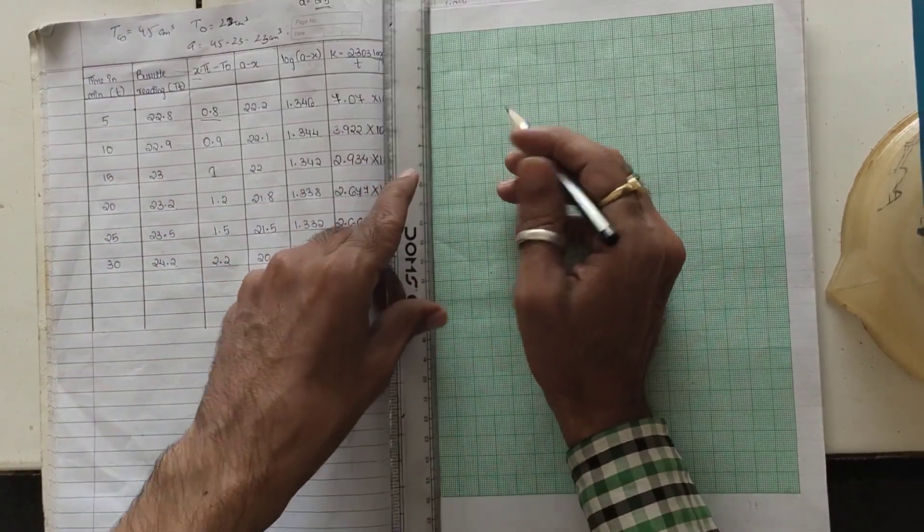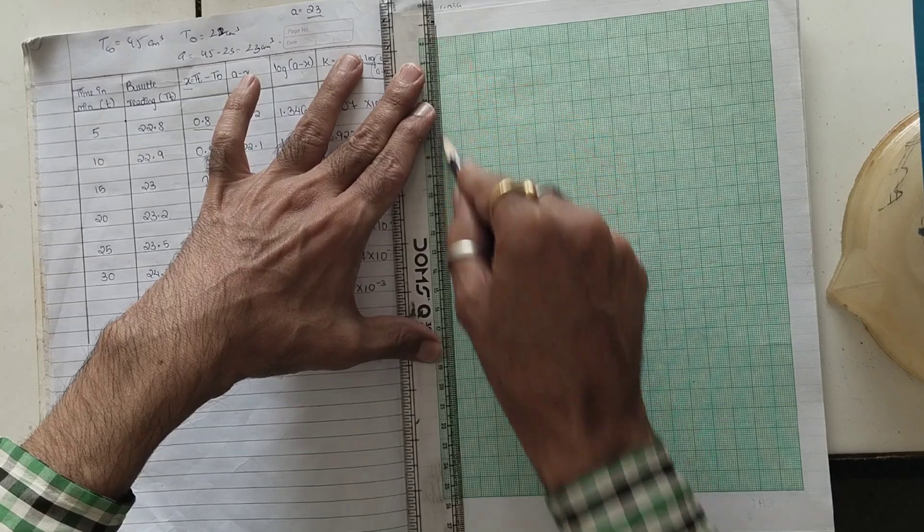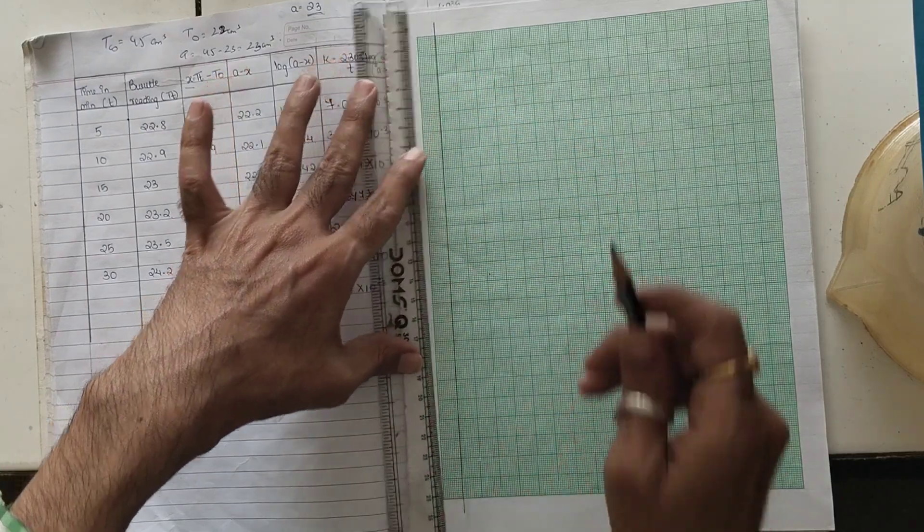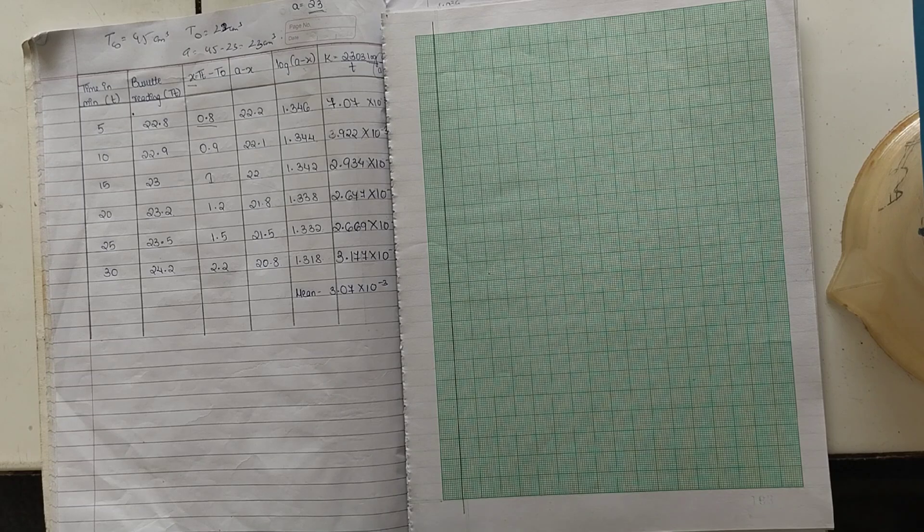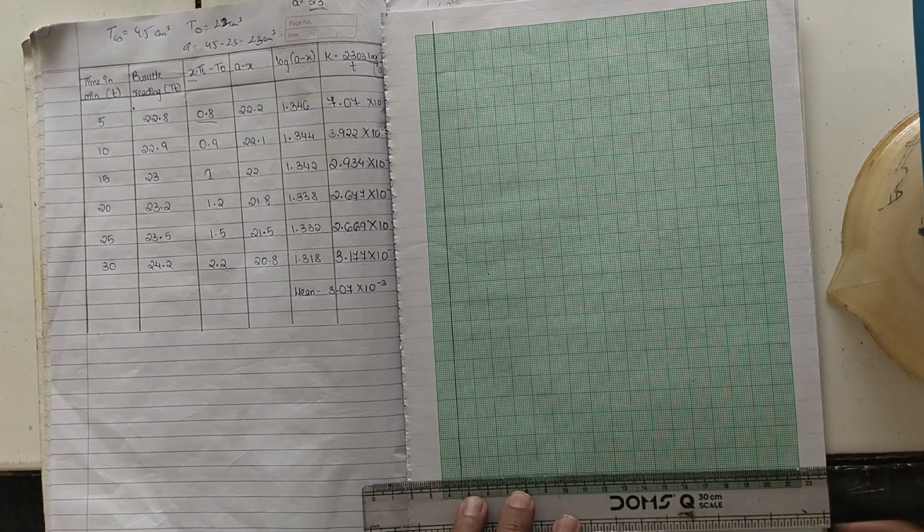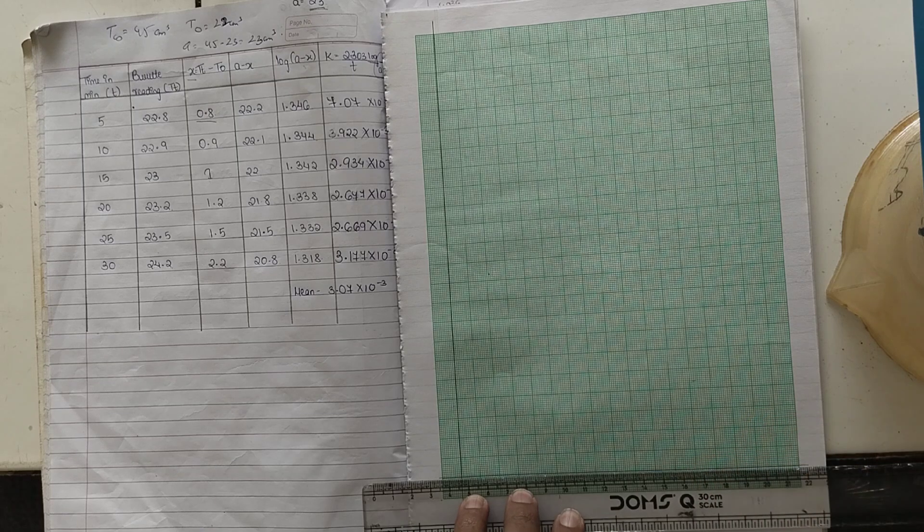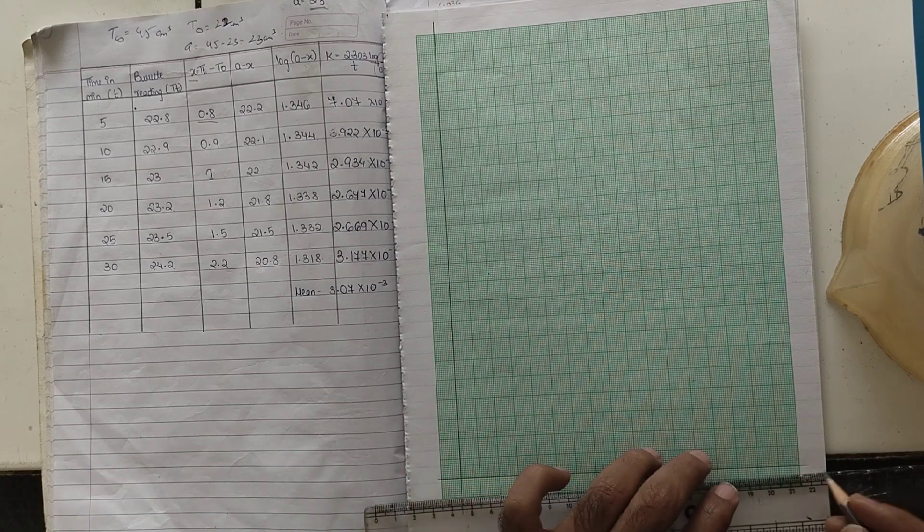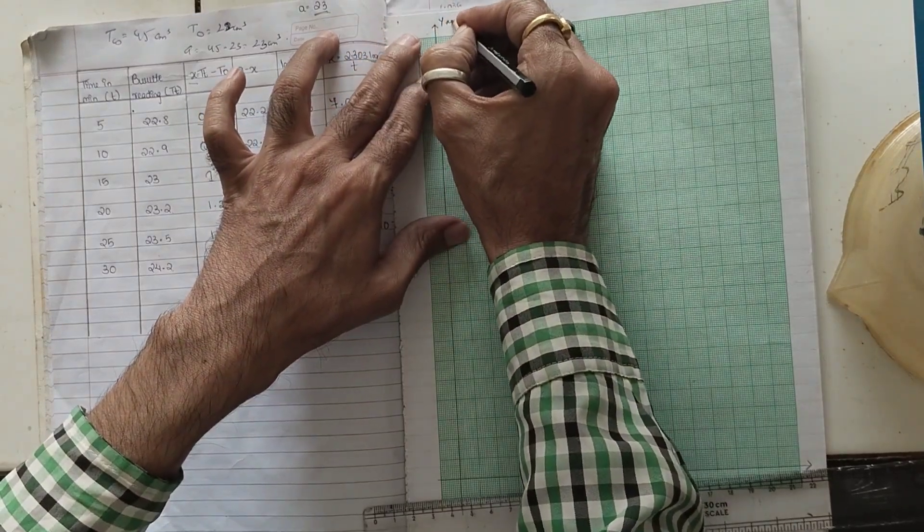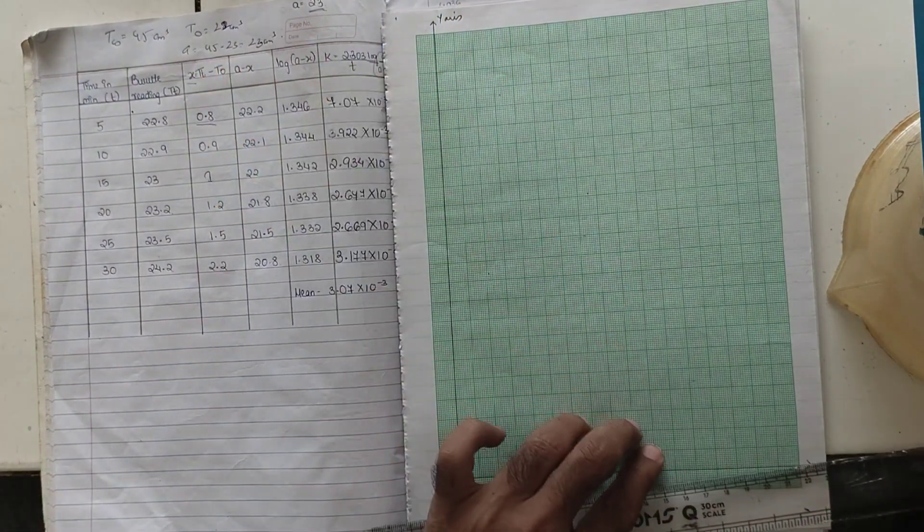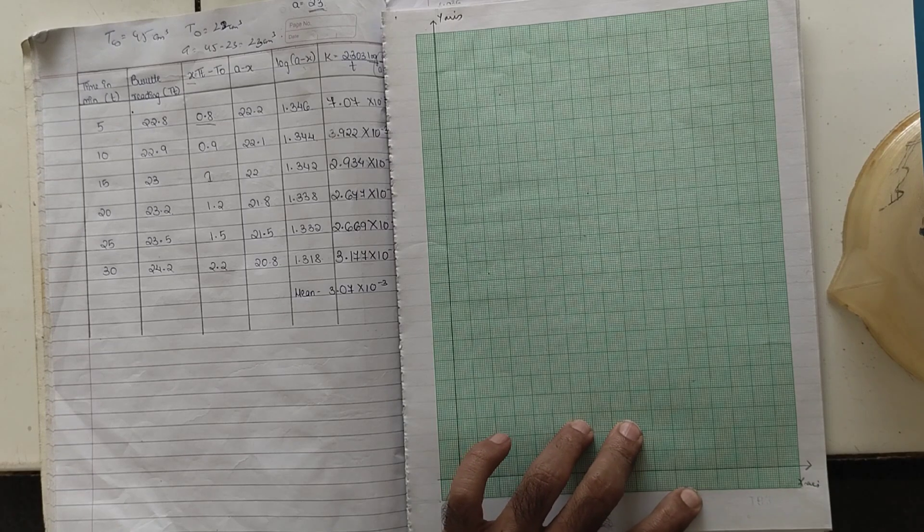What we do is we are going to leave one square from both the sides, from the left and from the bottom. This way. We are going to mark this - this is Y axis and this is X axis.